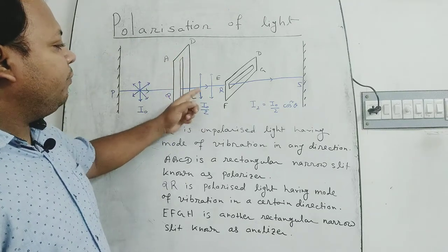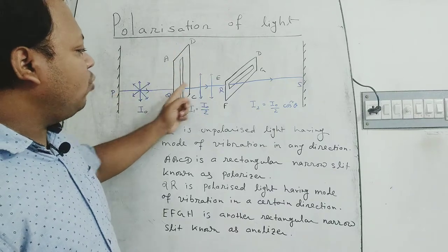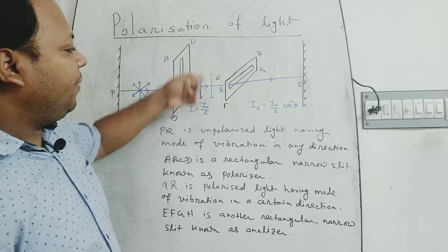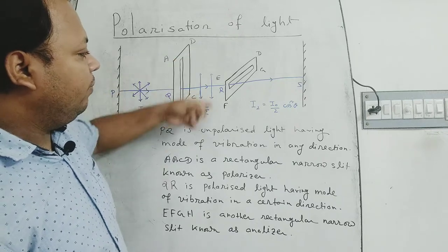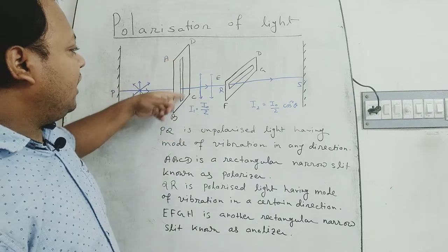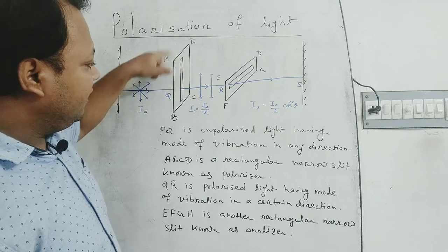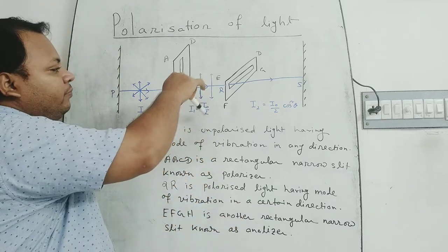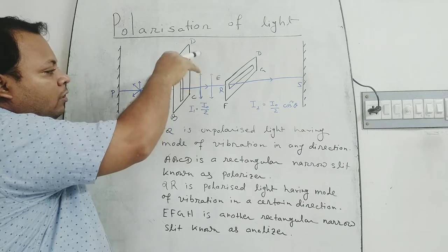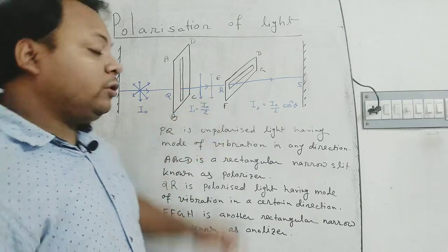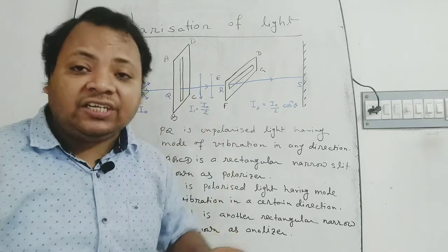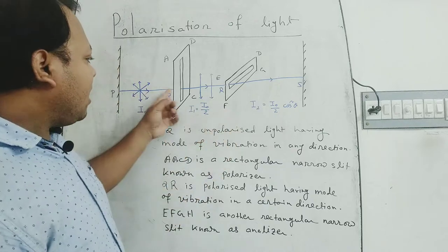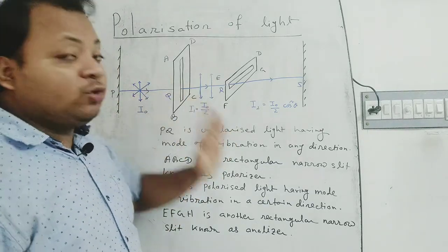After passing through the cardboard ABCD, the mode of vibration of the particle of the string QR is in a certain direction — that is, in the vertical plane, along the vertical plane. Since the first cardboard ABCD is parallel to the vertical plane, the mode of vibration of the particle is along the vertical line. That's why the mode of vibration of the particle of the string QR is restricted in a certain plane, and the wave QR is known as a polarized wave.